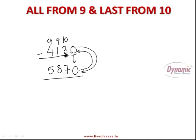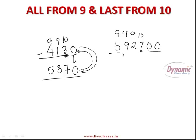Let's take one more example: 592700. Here 7 becomes the last digit, and the two zeros come down as they are. So: 9−5=4, 9−9=0, 9−2=7, 10−7=3, and the two zeros come down. The complement of 592700 is 407300. Whenever a number ends with zeros, bring all those zeros down and treat the digit before them as the last digit.